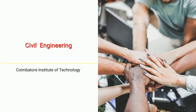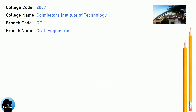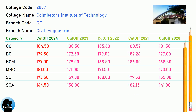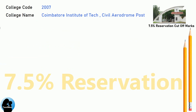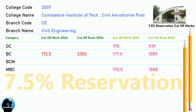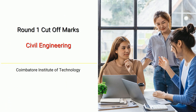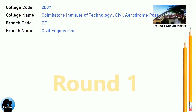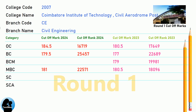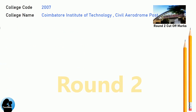DNA Cut-Off for Coimbatore Institute of Technology in Civil Engineering. DNA 7.5 Reservation Cut-Off for Coimbatore Institute of Technology in Civil Engineering. DNA Round 1 Cut-Off for Coimbatore Institute of Technology in Civil Engineering. DNA Round 2 Cut-Off for Coimbatore Institute of Technology in Civil Engineering.